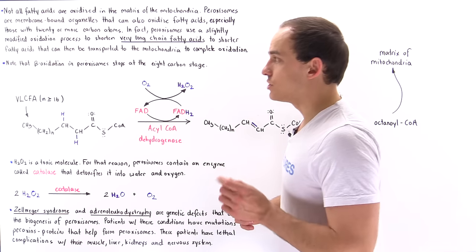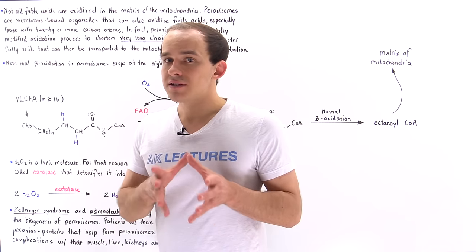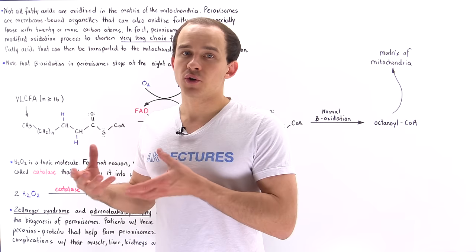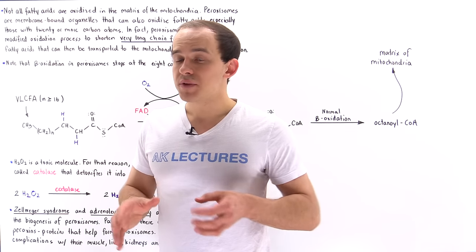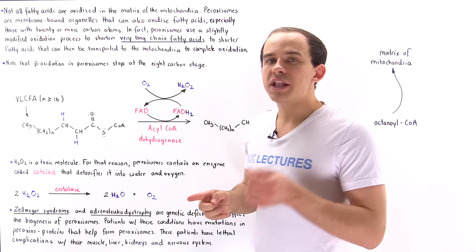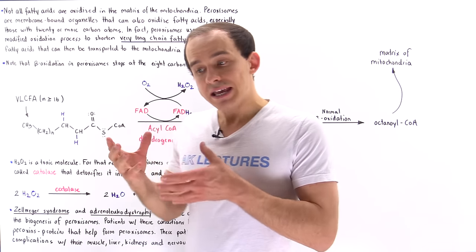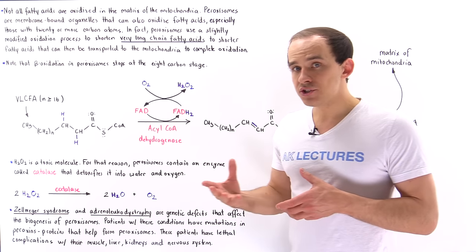So in patients, in individuals with these genetic conditions, the peroxisomes don't actually form correctly or don't form at all. And so what that means is these very long-chain fatty acids will not be broken down and they will increase in concentration in those individuals.